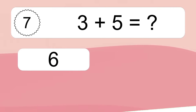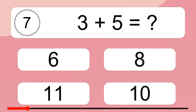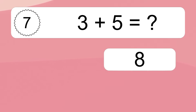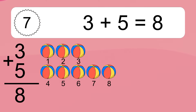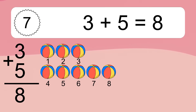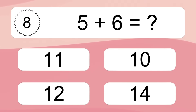3 plus 5 equals what? 3 plus 5 equals 8. Let's count it: 1, 2, 3, 4, 5, 6, 7, 8, 9.